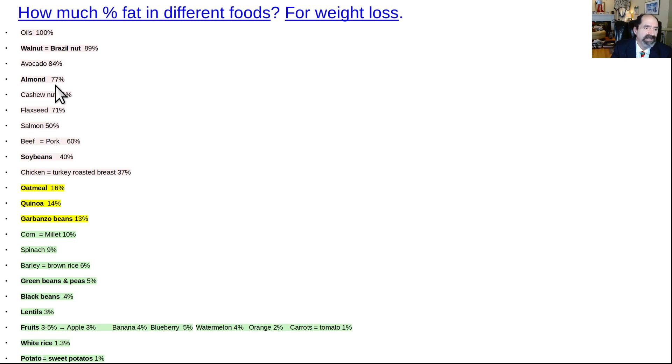Almonds, about 77% fat. Cashew nuts, 71% fat. Now, we're trying to get our total fat intake below 10%. So if you're eating something like these nuts in the range of 70% to 90% fat, it's going to be hard to get your total fat intake below 70%. Same thing with oils.